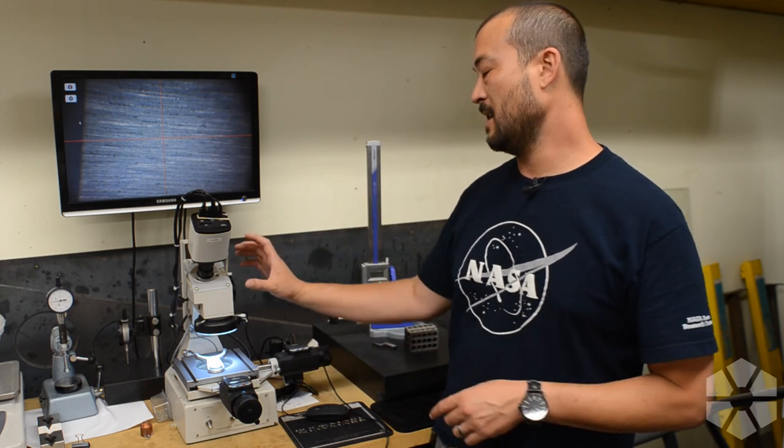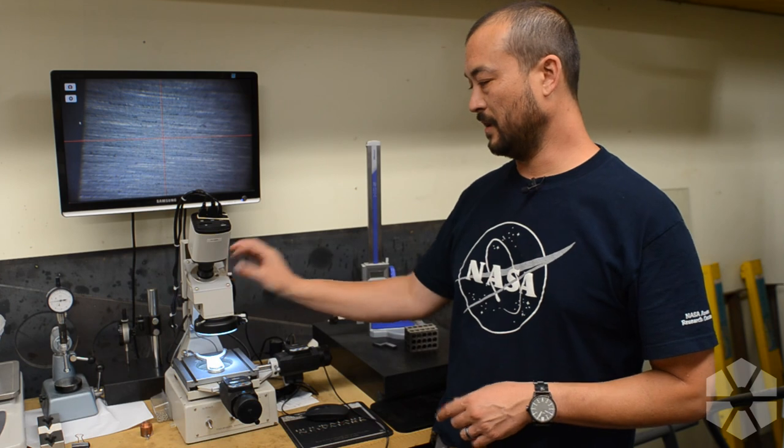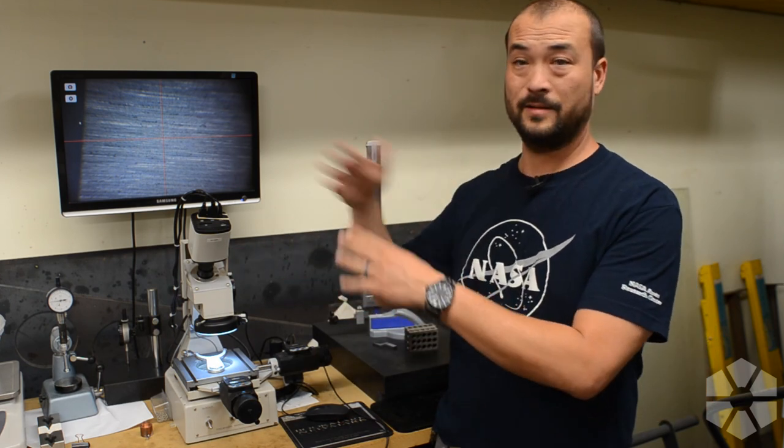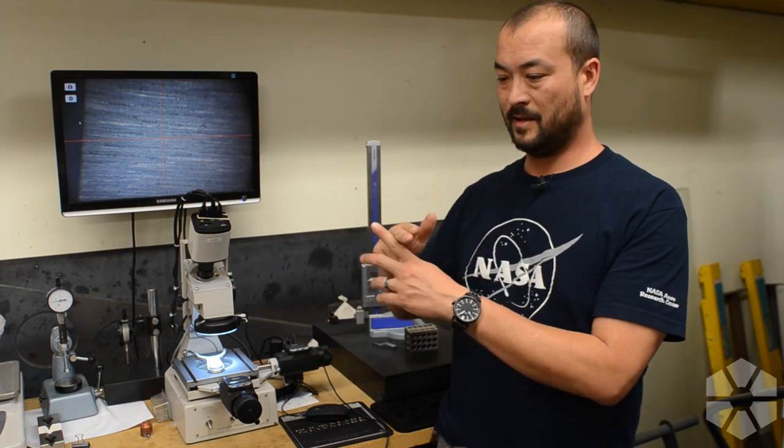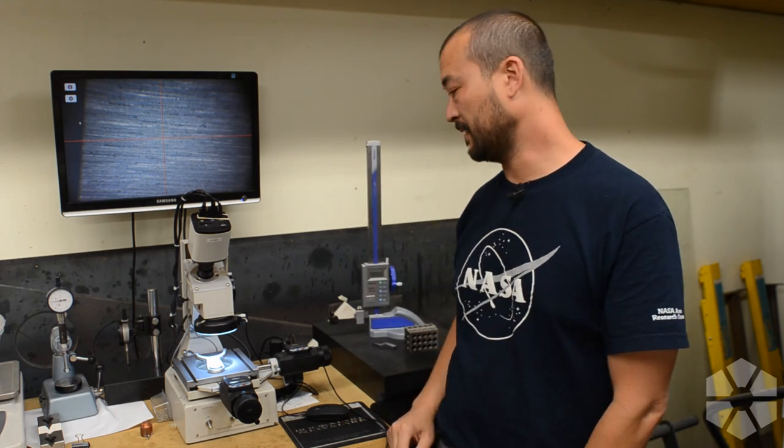And there's actually a wheel here where you can, it's got crosshairs, basically like this does, but you can rotate them so you can measure angles and cool stuff like that.